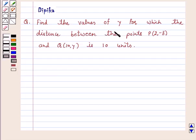Find the values of y for which the distance between the points P(2, -3) and Q(10, y) is 10 units.